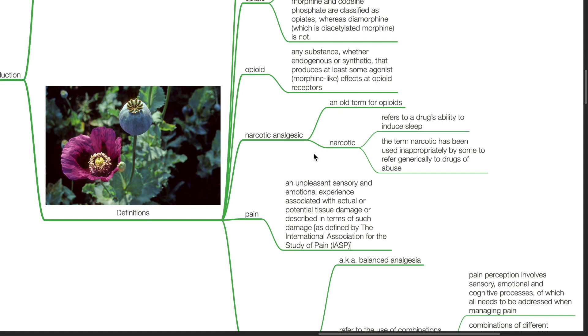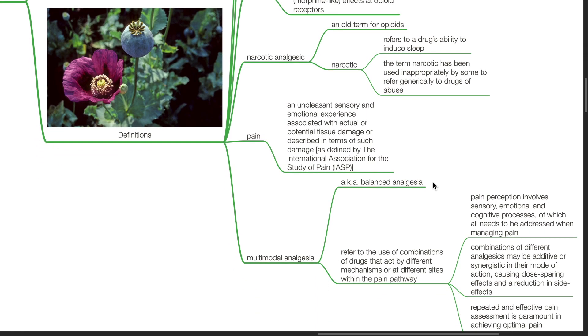Narcotic analgesic is an old term for opioids. Narcotic refers to a drug's ability to induce sleep. The term narcotic has been used inappropriately by some to refer generically to drugs of abuse.